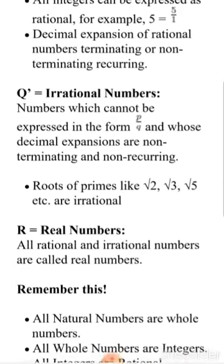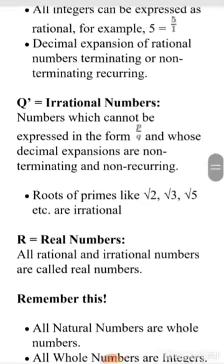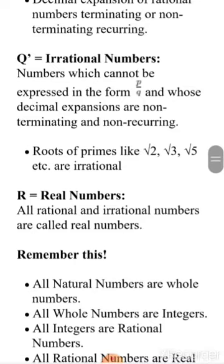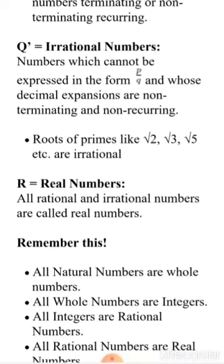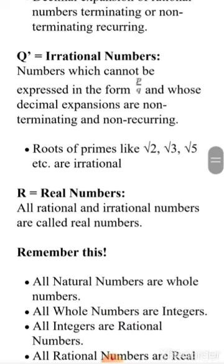Now talking about decimal expansion: the decimal expansion of Rational Numbers is either terminating or non-terminating recurring. This means when you divide numerator by denominator, the answer either terminates or repeats. For example, 0.375 is a terminating decimal, and 0.3333... is a non-terminating recurring decimal.